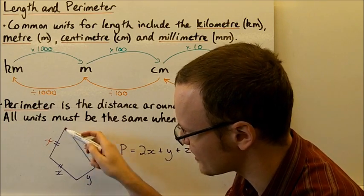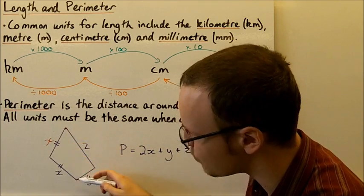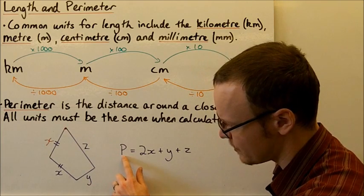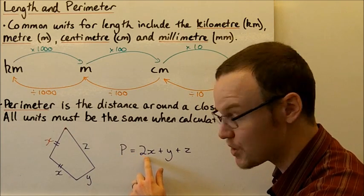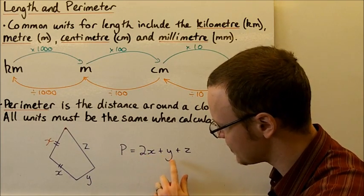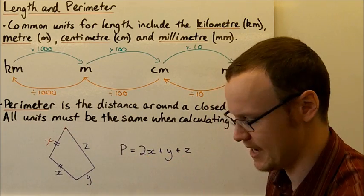So x plus x gives two lots of x, which is 2x, plus y, plus z, and that gets us all the way back to the start. So the perimeter P equals 2x plus y plus z.